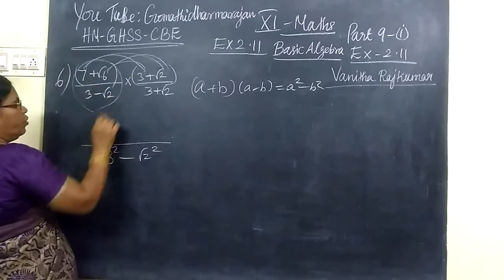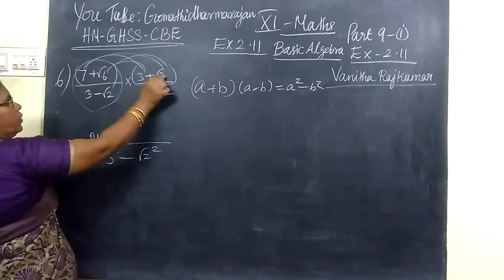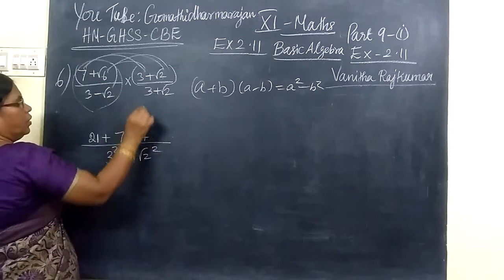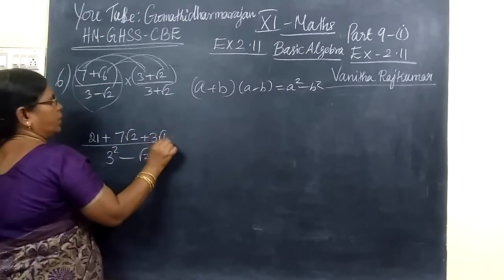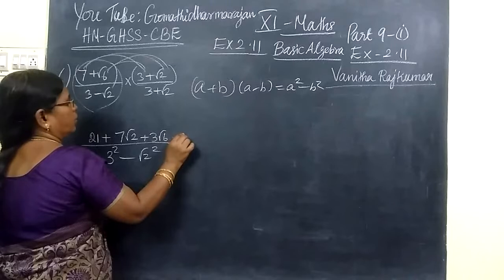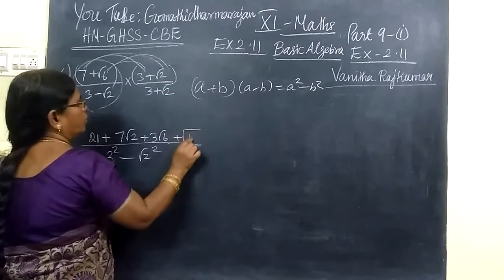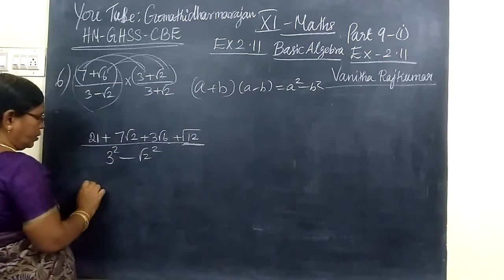Then multiply the numerator: 21, then 7 into root 2 is 7 root 2, then 3 root 6, then root 6. 6 into 2 is 12. It is very very simple only.